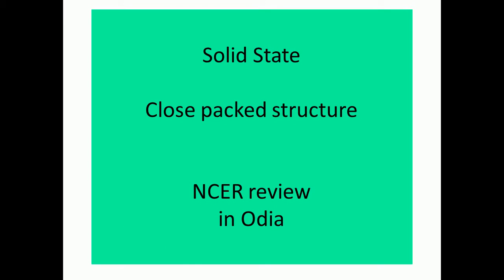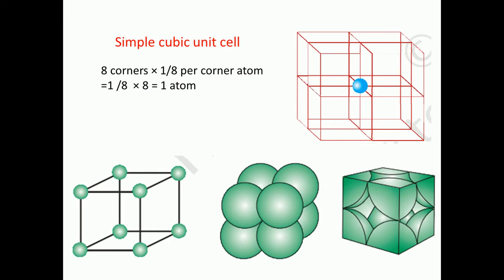Hello guys, I am covering crystal structure. We saw body-centered cubic (BCC) and close-packed structures. Before that, let's revise things. Starting with the simple cubic unit cell - if you look at the corner atoms, we can say that eight corners multiplied by one-eighth per atom gives one atom total.